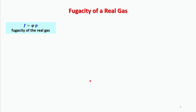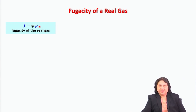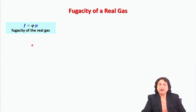In continuation with our last discussion, we are talking about fugacity of a real gas, where fugacity is defined as a coefficient φ multiplied by the pressure. Pressure is what we use for ideal gases, but in real gases we will use fugacity. Is there any way that I can find out what the fugacity of the real gas is?